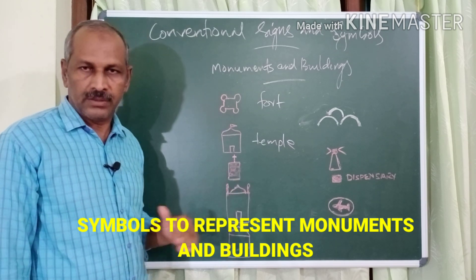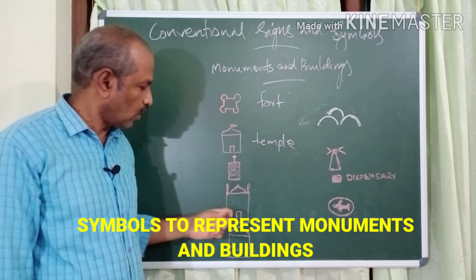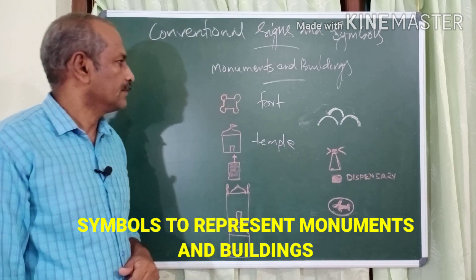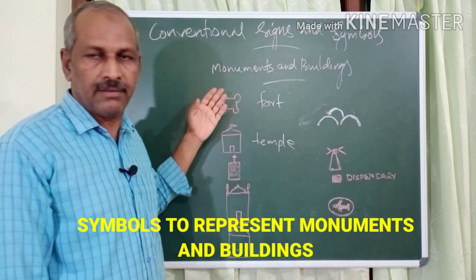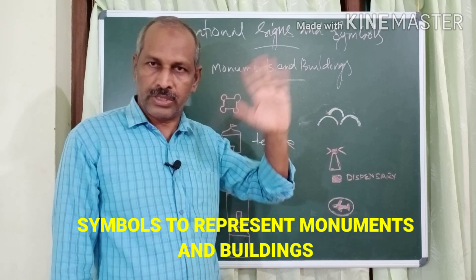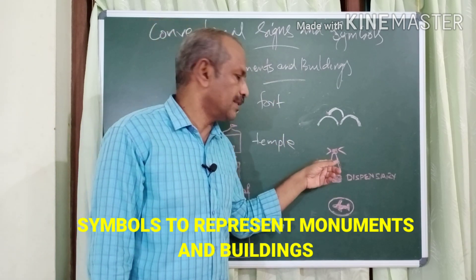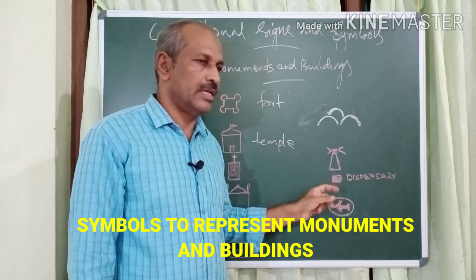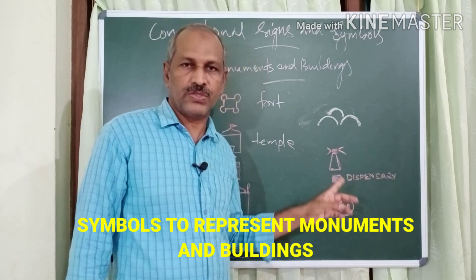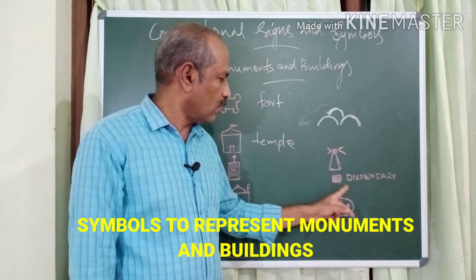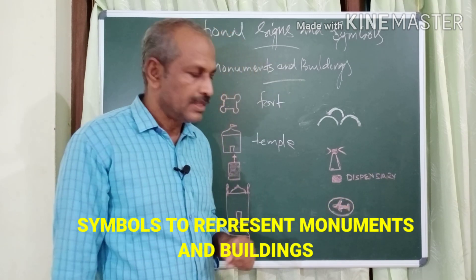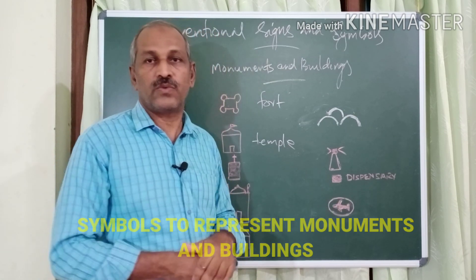A tomb is a building in which a body is buried — its symbol has no flag and no entrance. A graveyard or burial ground is also shown. A lighthouse is represented in black color. A red square labeled 'dispensary' represents a health center. An oval or elliptical shape with an aeroplane symbol inside represents an airport. All monument symbols except lighthouse are in red color.